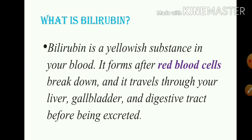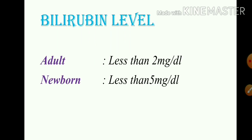Bilirubin comes from red blood cells. The spleen and liver break them down. One form of the breakdown product is bilirubin. This process involves the liver, gallbladder, and digestive tract — it is a normal process. The normal bilirubin level is: adult less than 2 mg per dL, newborn less than 5 mg per dL.